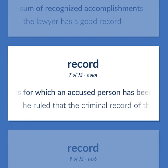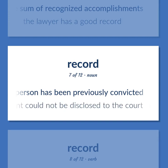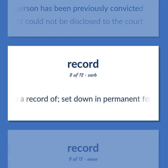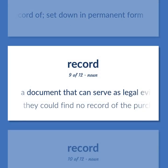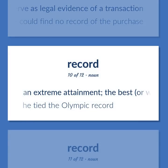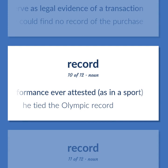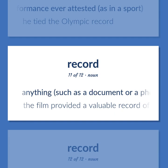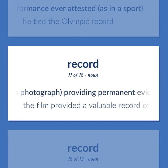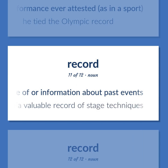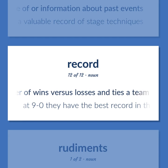A list of crimes for which an accused person has been previously convicted — he ruled that the criminal record of the defendant could not be disclosed to the court. Make a record of; set down in permanent form. A document that can serve as legal evidence of a transaction — they could find no record of the purchase. An extreme attainment; the best or worst performance ever attested, as in a sport — he tied the Olympic record. Anything, such as a document or a phonograph record or a photograph, providing permanent evidence of or information about past events — the film provided a valuable record of stage techniques. The number of wins versus losses and ties a team has had — at 9-0, they have the best record in their league.